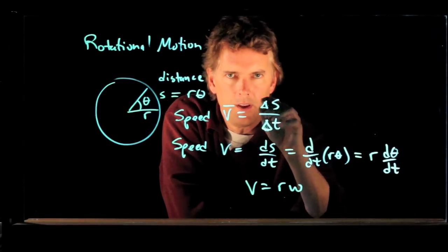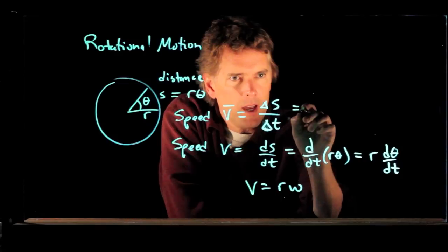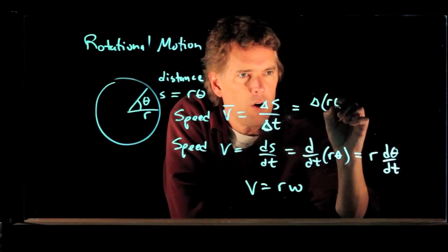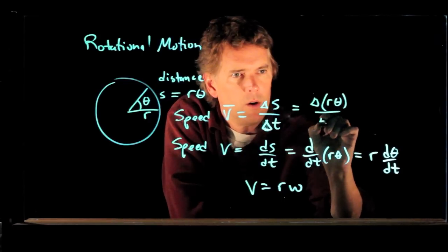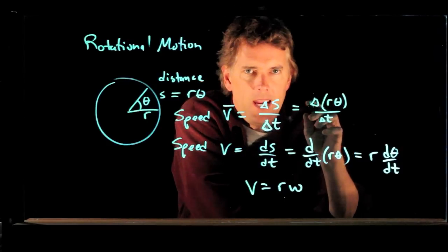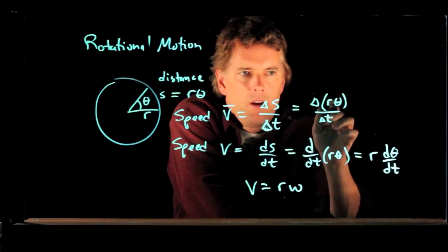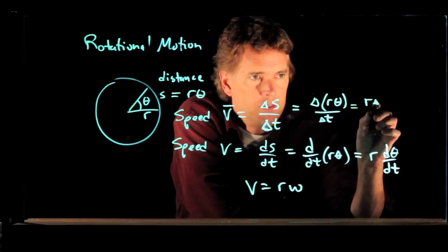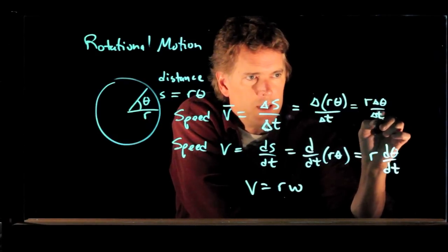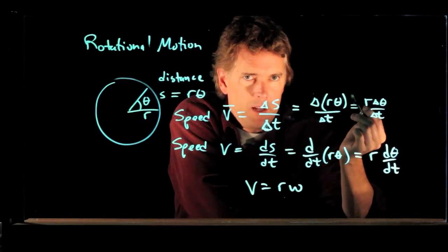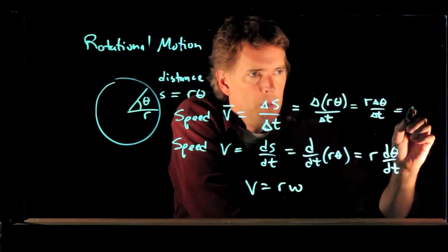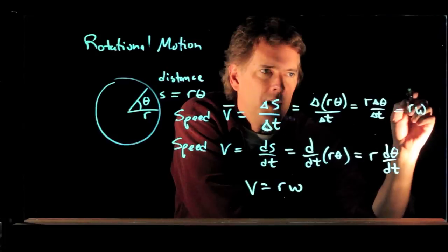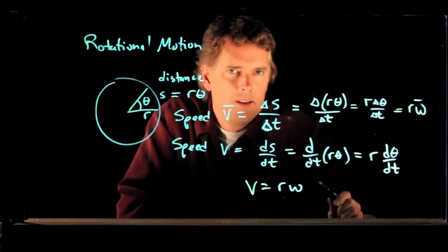You can do this with deltas the same way. Delta S, but delta of R theta over delta T means the change in R theta. R doesn't change, only theta changes. So this is R delta theta over delta T. But we know what delta theta over delta T is. It is omega. So we get the same thing. In this case, it's specifically omega bar.